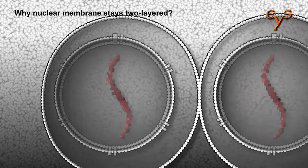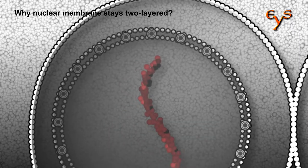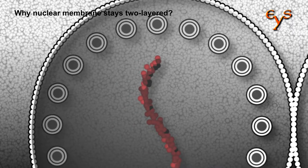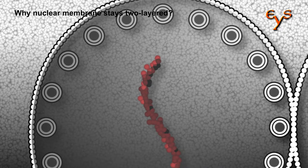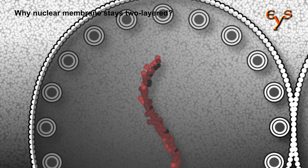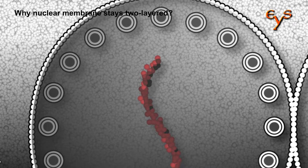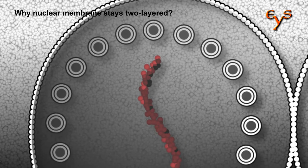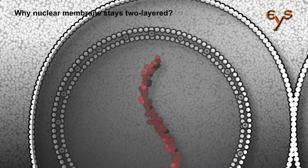The simplest explanation is that it does not disperse into atoms; rather, it disassembles into separate vesicles, each retaining its two-layered structure. In response to a specific signal, these vesicles reassemble to recreate a two-layered nuclear membrane.